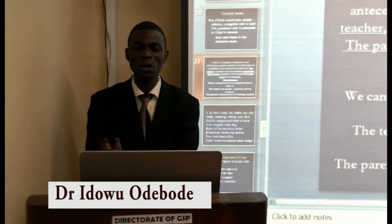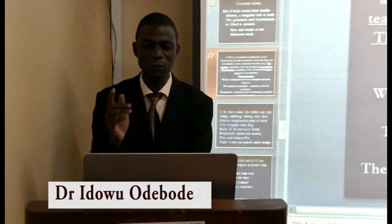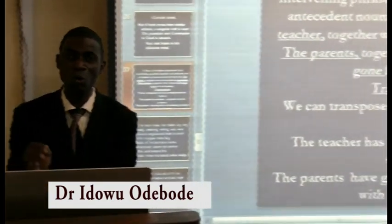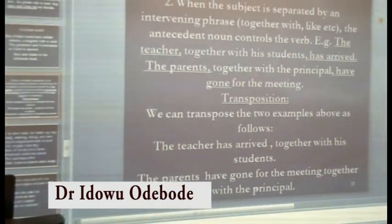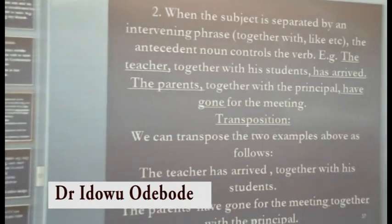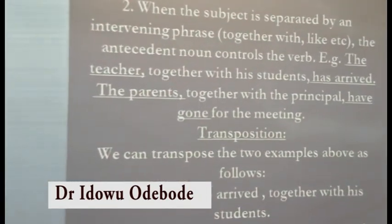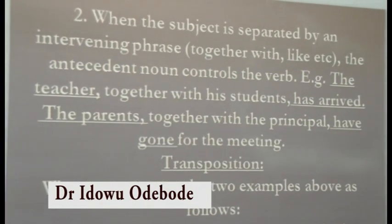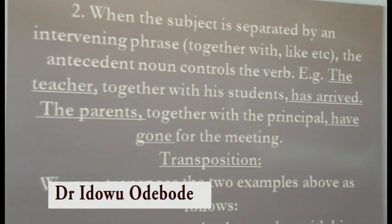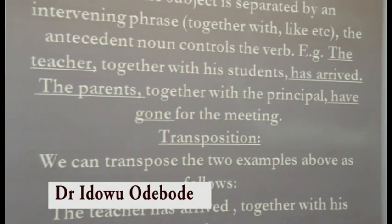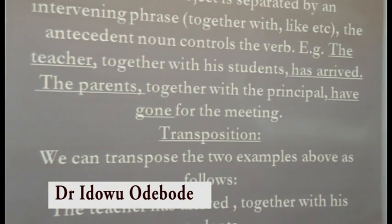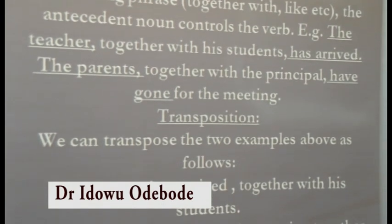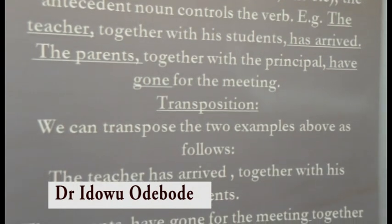Rule 2: When the subject is separated by an intervening phrase like 'together with', 'along with', 'like', etc., the antecedent controls the verb. For example: 'The teacher, together with the students, has arrived.' 'The parents, together with the principal, have gone for the meeting.'